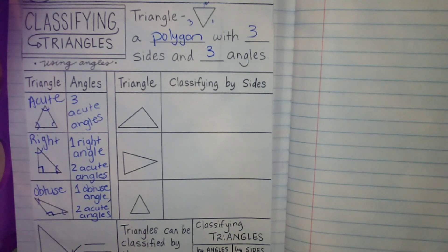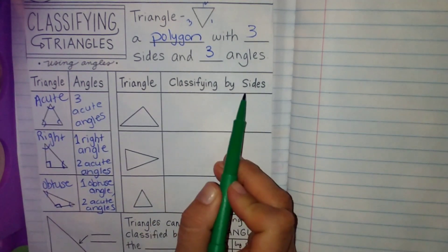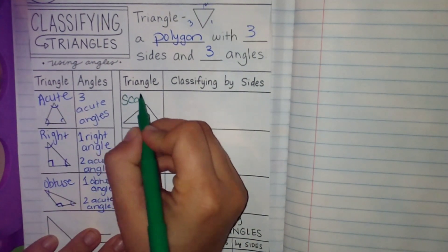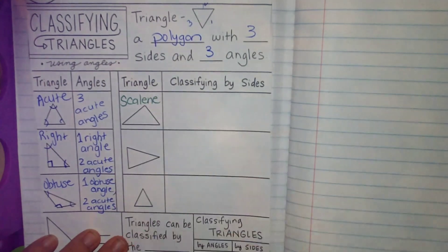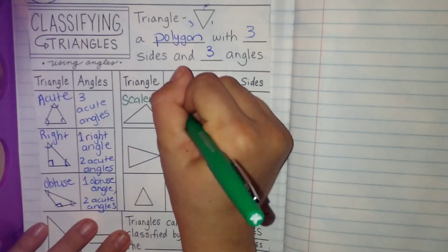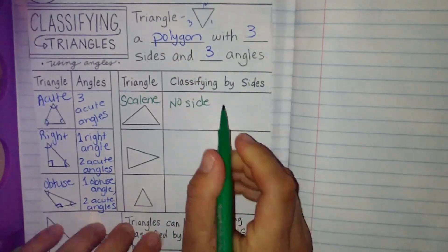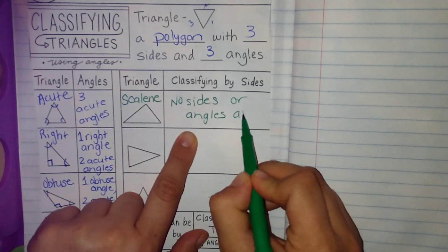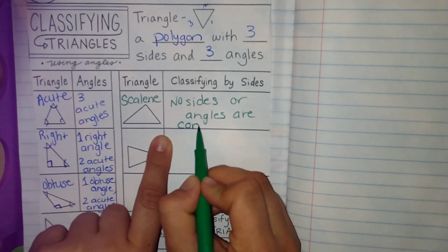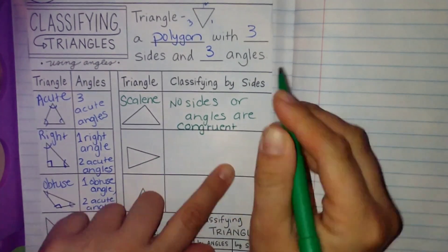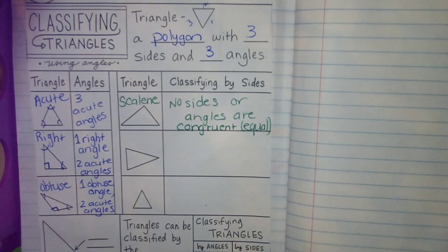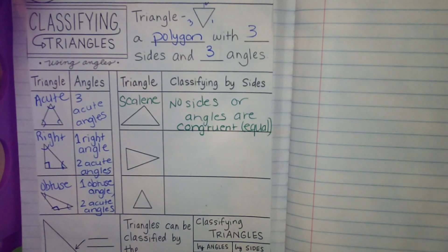Now we're going to be going into a little bit more specifically when we're talking about classification by sides, classifying by sides. So the first one is a scalene. A scalene triangle has no sides or angles that are congruent or that means equal.